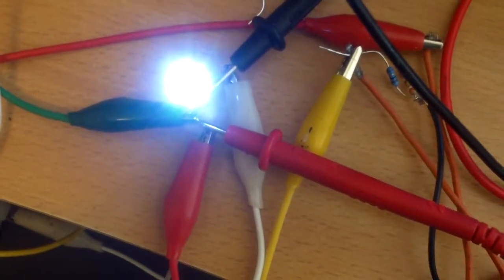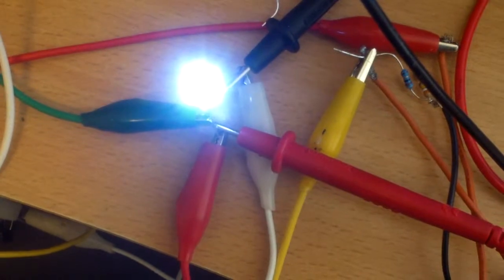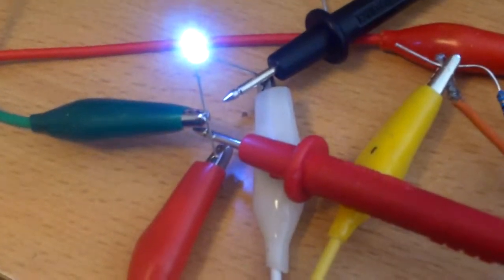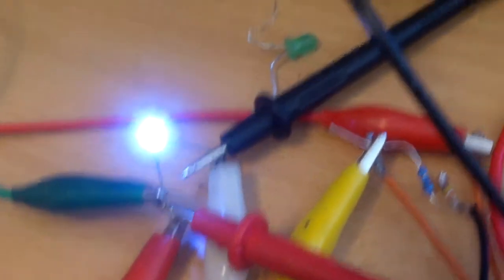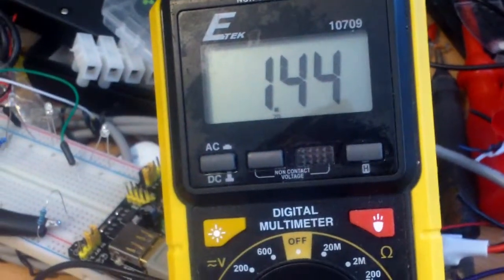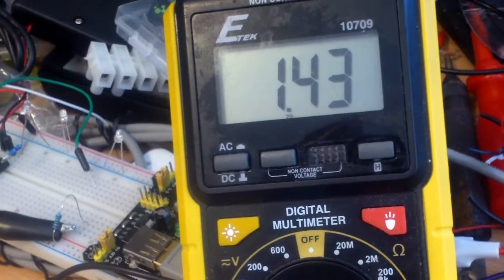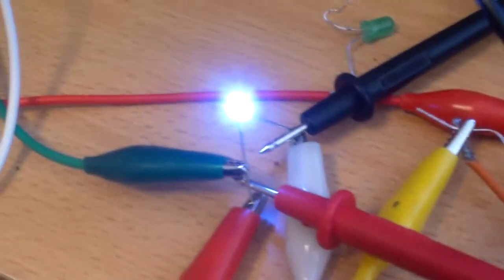Now I'm trying out a 3.3 volt bright white LED. As you can see, I'm just using one triple A battery here and it is working. I hooked up a meter and it's actually using 1.44 volts to light this up.